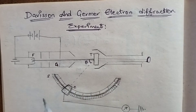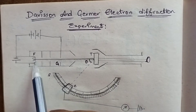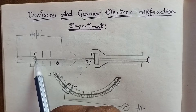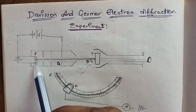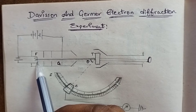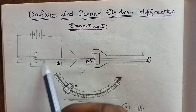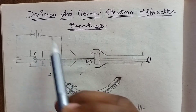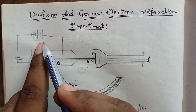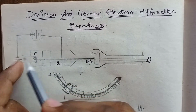Let's talk about the operation. The filament is heated using batteries. We use energy to heat the filament. This phenomenon is called thermionic emission — electrons are emitted from the heated filament.